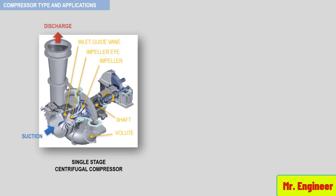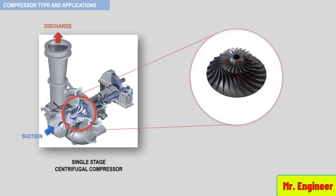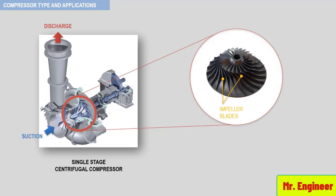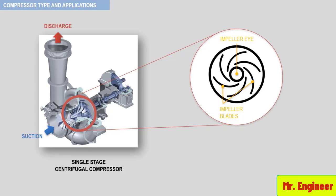Perhaps the most important element in a centrifugal compressor is the impeller. An example of an open impeller is seen here. This impeller is made of blades and an eye. And here, a simplified drawing of the same impeller that we will use extensively in later videos to illustrate the flow of gas inside the compressor and the relationship between the velocity of the gas as it crosses the impeller and the head or energy generated by the compressor.